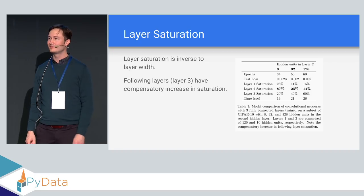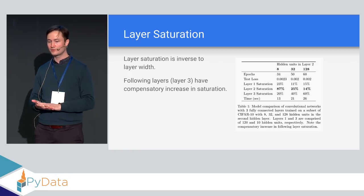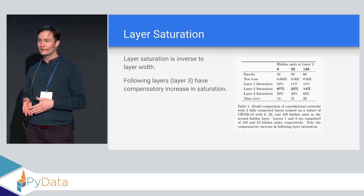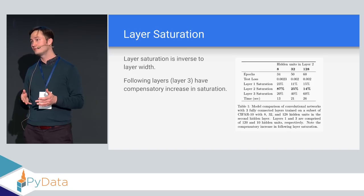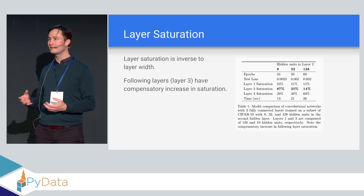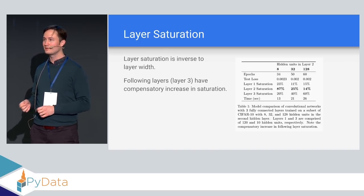Final question: what about more complex computation graphs where layers are not sequential? The speaker noted that you would still be able to save the output of the pre-activation state and its history. With non-sequential graphs you might get really interesting dynamics — feedbacks and potentially strange attractors explaining why patterns move in certain ways. That would be very interesting to explore in a next publication.